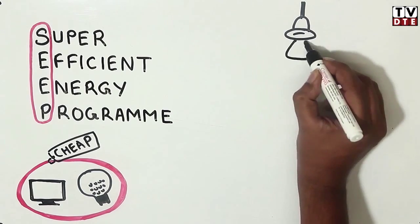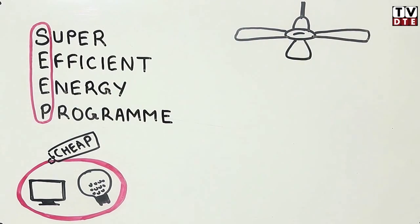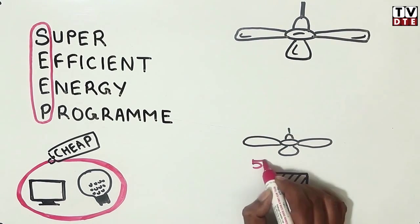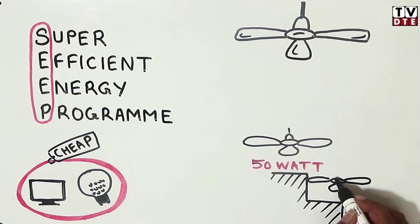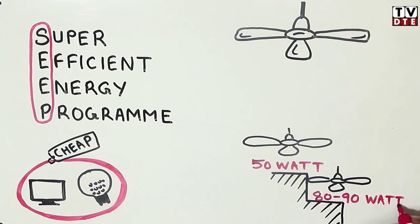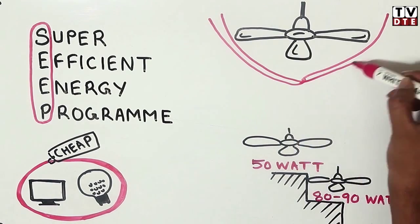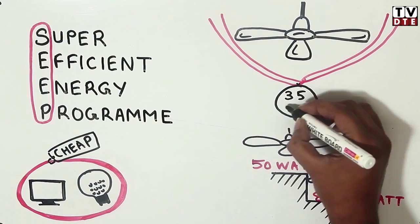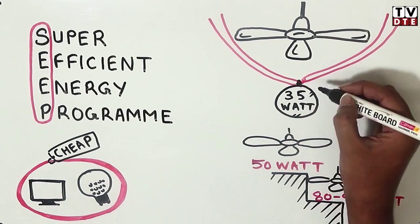The first product to be promoted under this program is the ceiling fan. A five-star ceiling fan consumes about 50 watt of power against a non-star rated fan which consumes 80 to 90 watt. The super-efficient fan built under SEEP will only consume 35 watt.